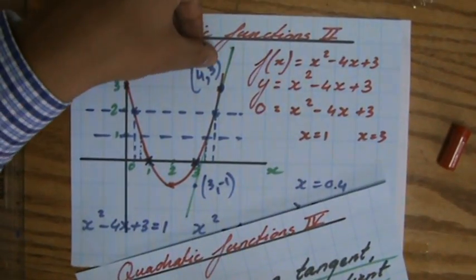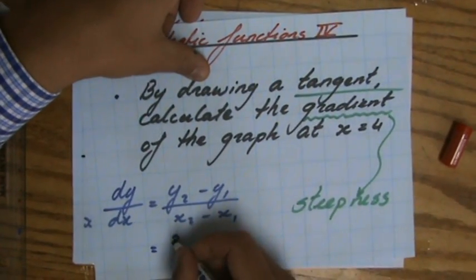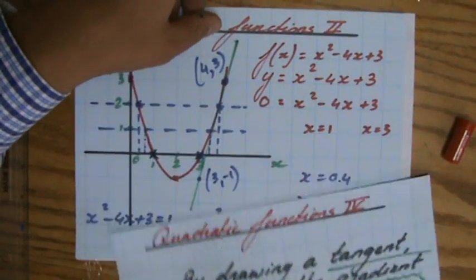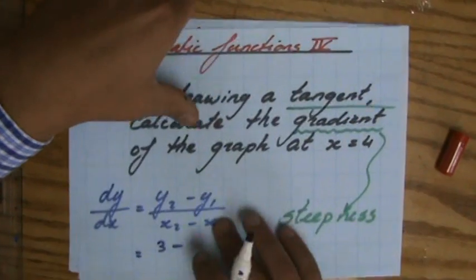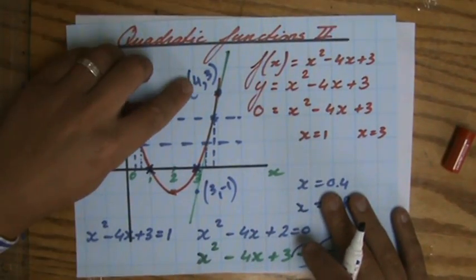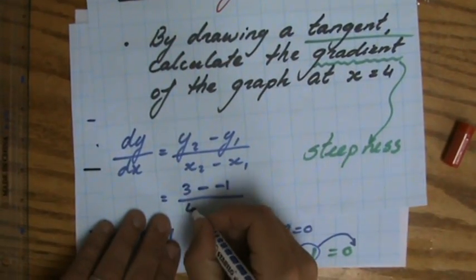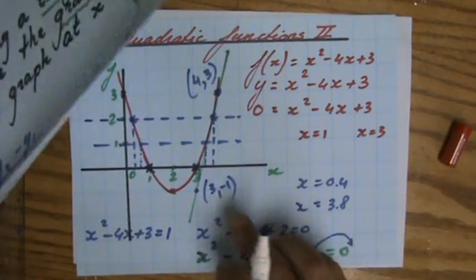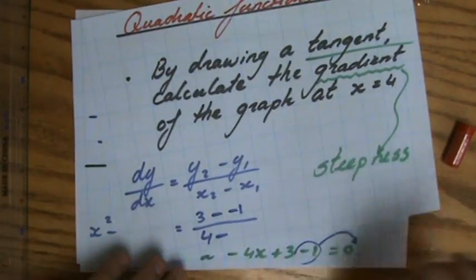y2, so 3, minus, now careful, because that is a minus 1, yeah, so minus a minus 1, over x2 minus x1, which is 4 minus 3.